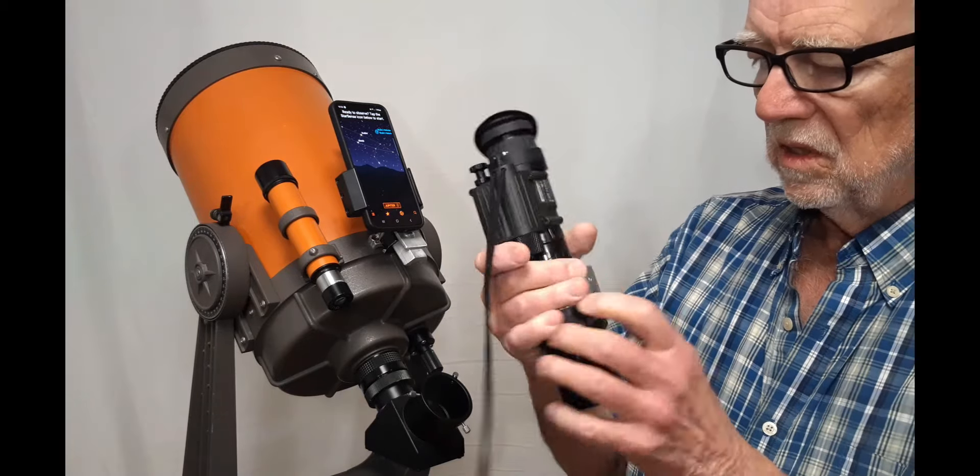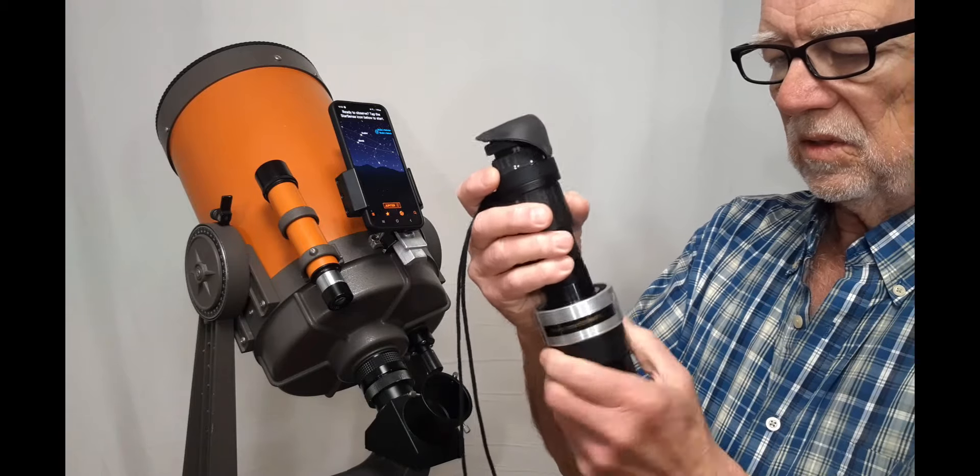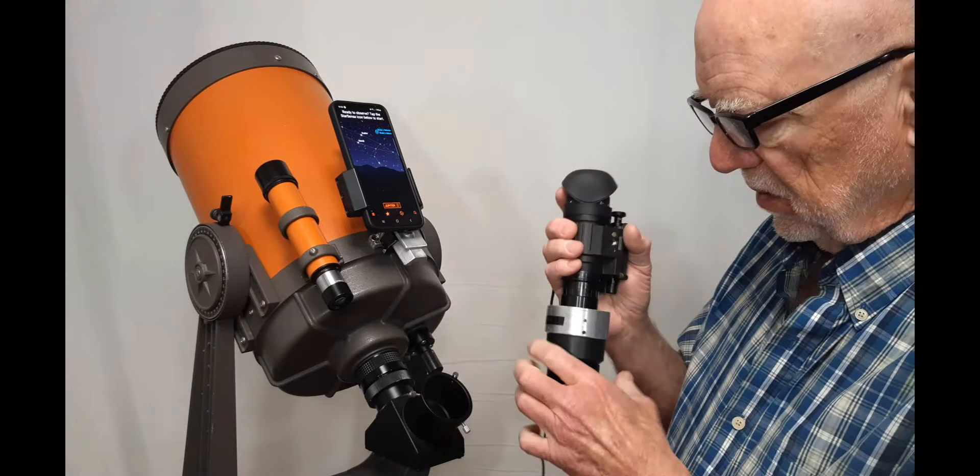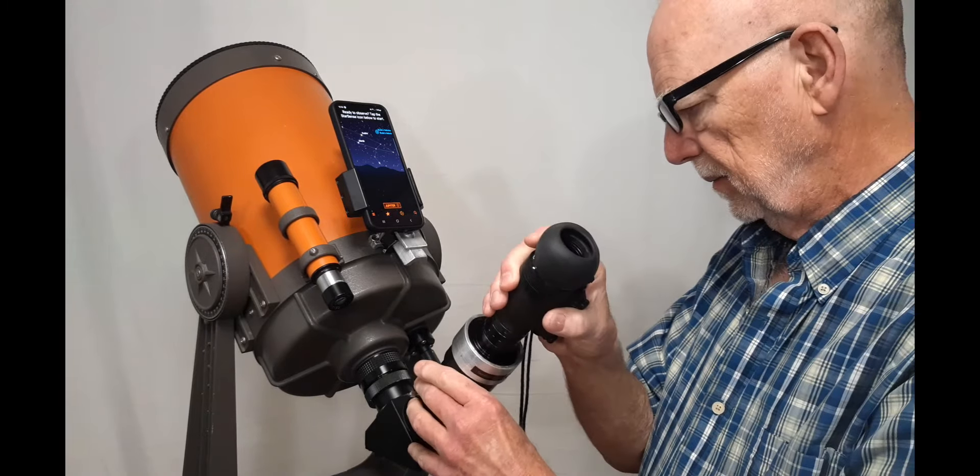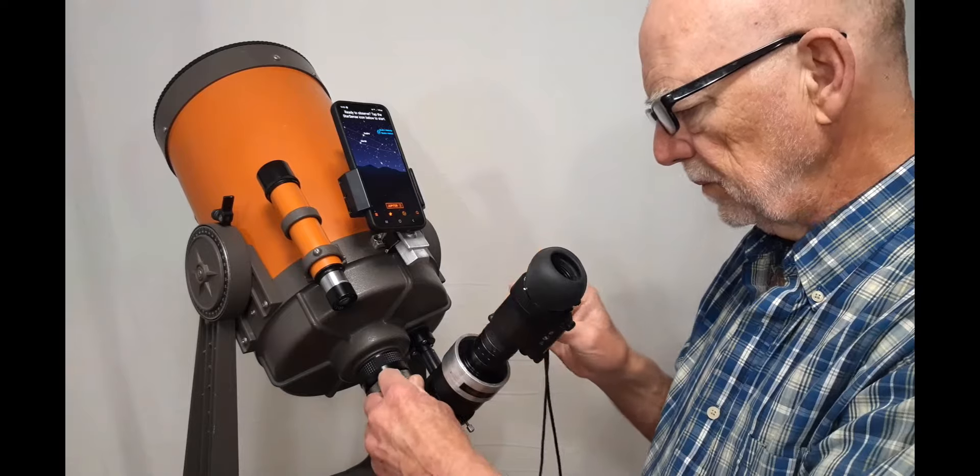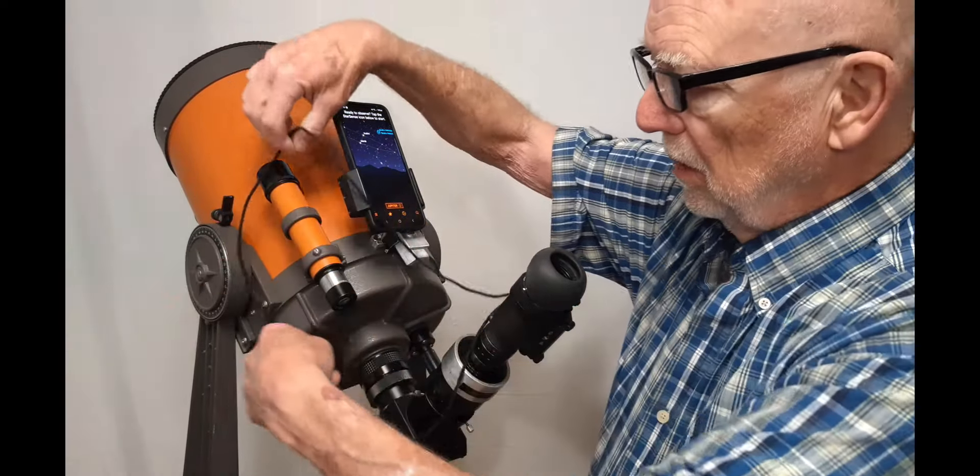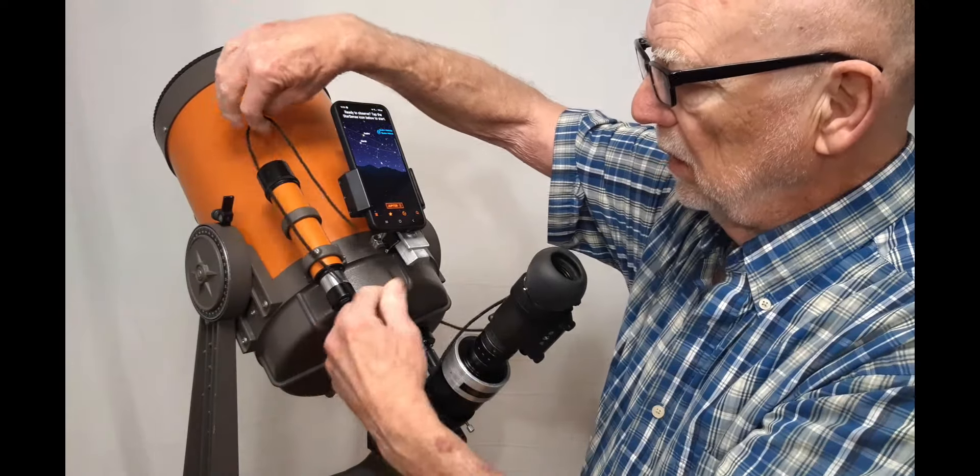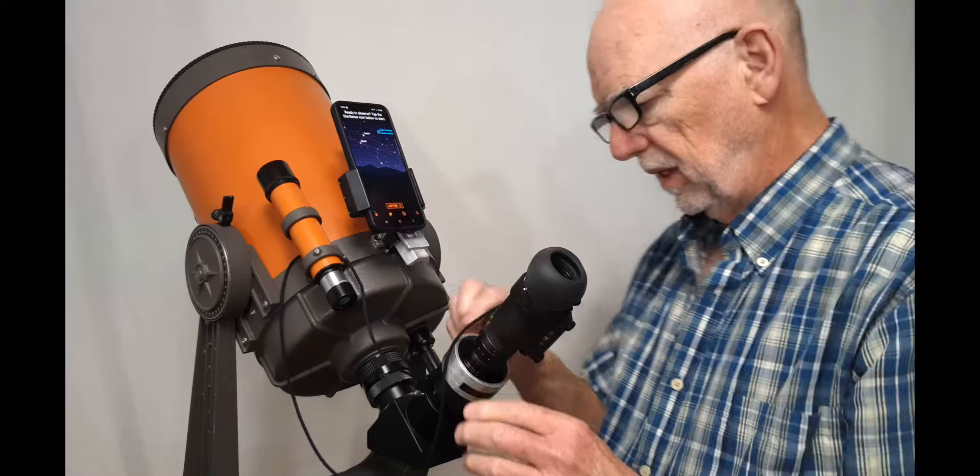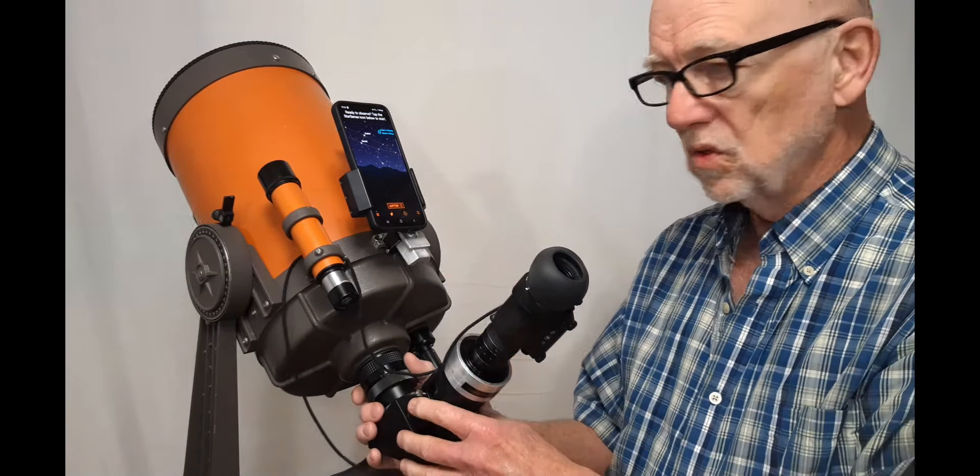This is an image intensifier attached to a very large eyepiece and this goes into this super large diagonal here. The image intensifier is very expensive so I like to protect it, make sure it's not going to hit the ground in any way by looping this over like that. Keep it safe. So now I've got the image intensifier on the scope.